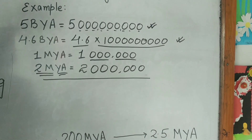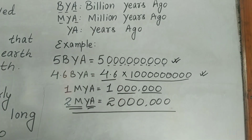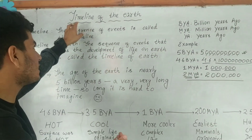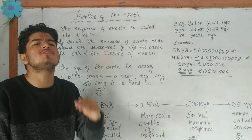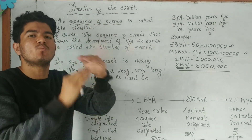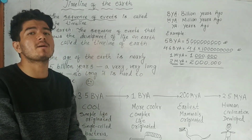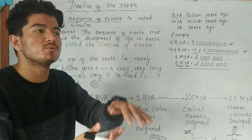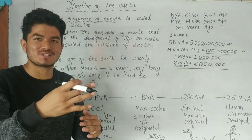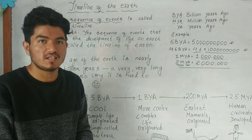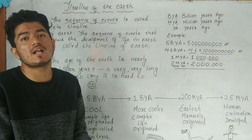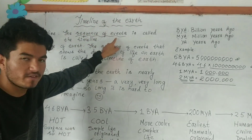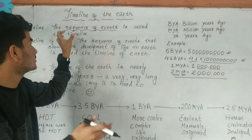I hope the concept of billion years ago and million years ago is clear. Now let us focus on the timeline of the Earth. What is a timeline? The sequence of events is called a timeline. For example, in the case of a human being: first a baby is born, that infant turns into a child, then a teenager, then an adult, then old age, and finally death. That sequence of events, one by one, is called a timeline.